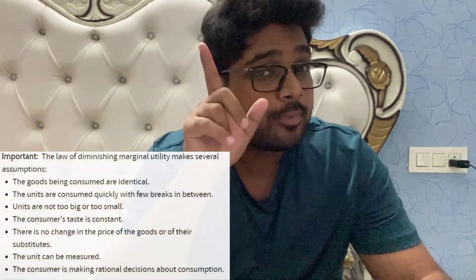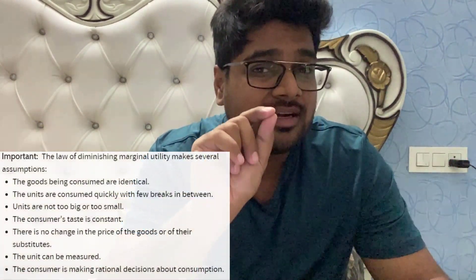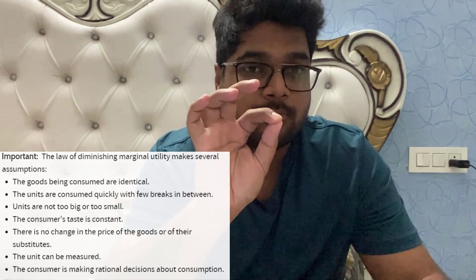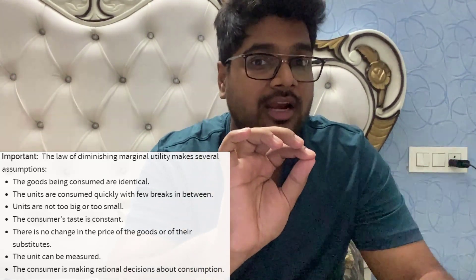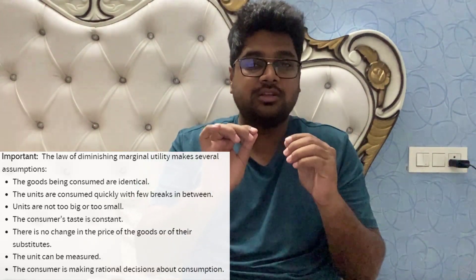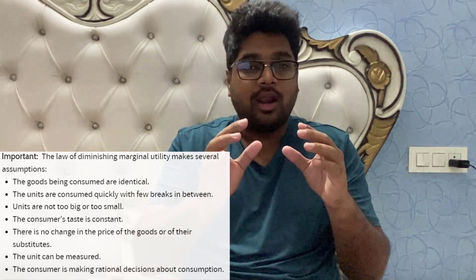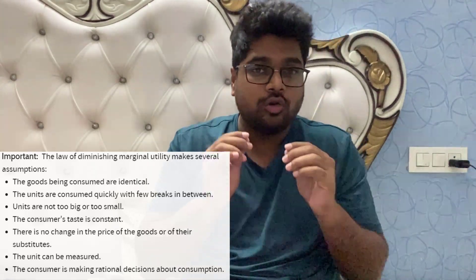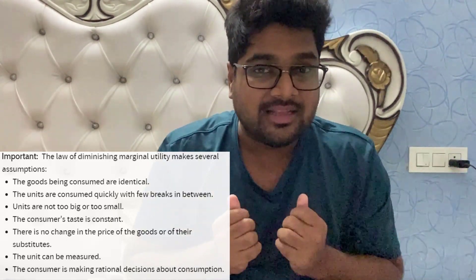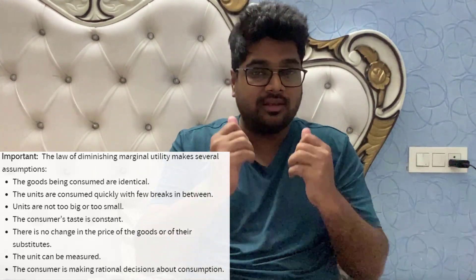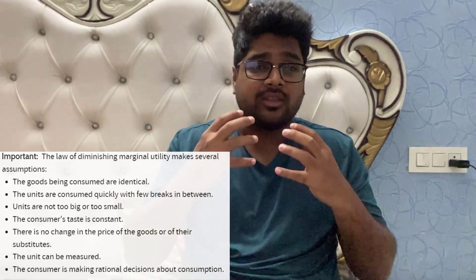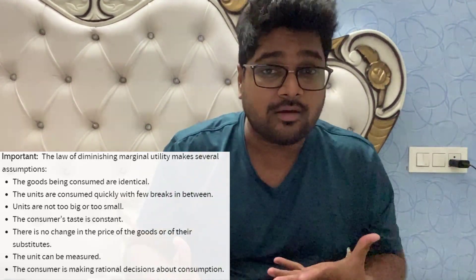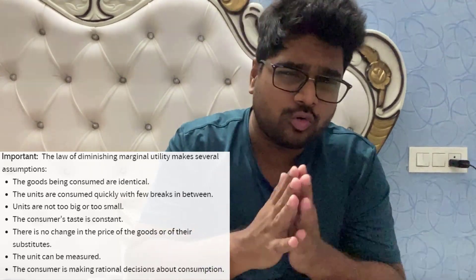Now there are rules that apply to this particular law. Those rules state that the product we're talking about must be exactly the same — there's no change in the product. Your consumption pattern must also be the same — it's not like you're using the product now and then using it again after two months. Your consumption pattern is frequent. That's how you know the value of the second and third product is not as much as the first one.